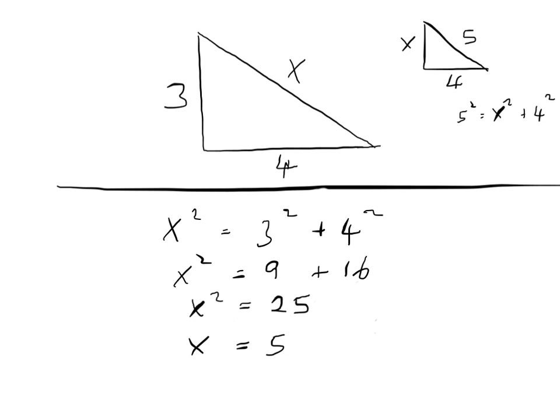Bear in mind the variable is not always the one isolated on its own. For example, if the hypotenuse is 5, then 5 squared equals x squared plus 4 squared. A lot of people make the mistake of thinking the variable is always on its own — no, it's always the hypotenuse. To recognize if you have to use Pythagoras' theorem, you need to have been given two sides and be looking for a third side.